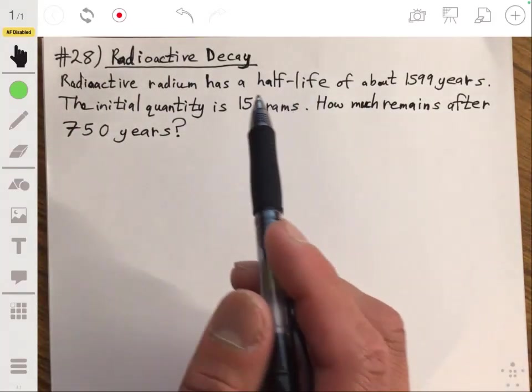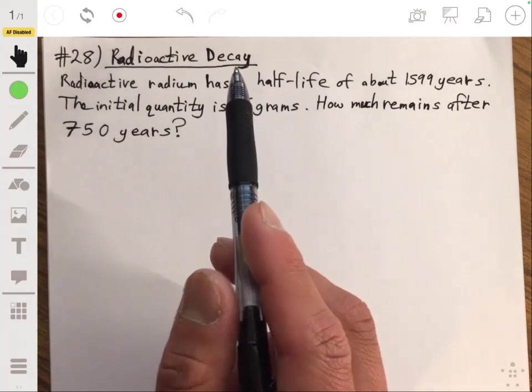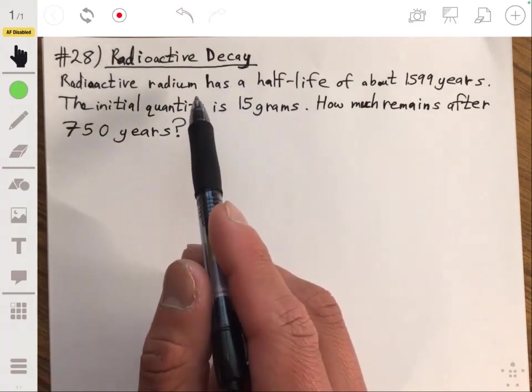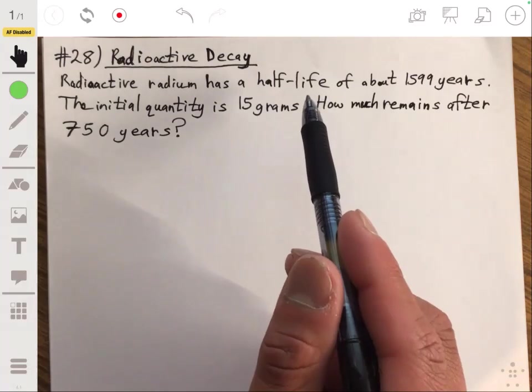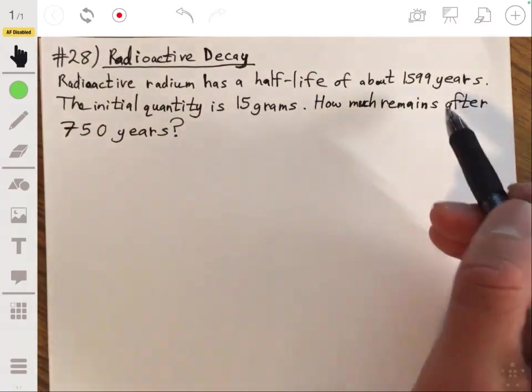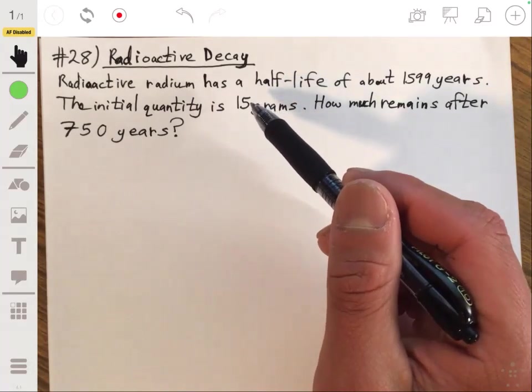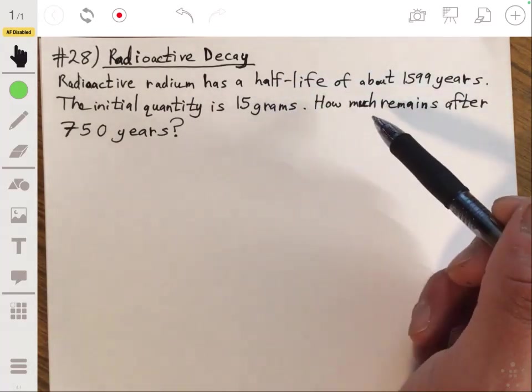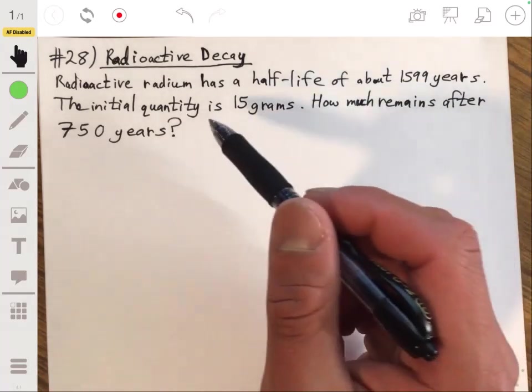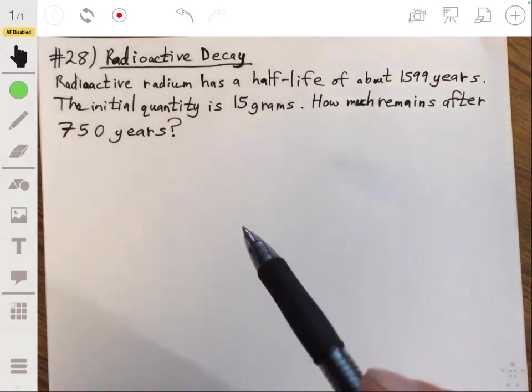All right, so in this problem we have radioactive decay, and we have the element radium, and we're told that it has a half-life of about 1,599 years, and it has an initial quantity of 15 grams, and we need to figure out how much remains after 750 years.